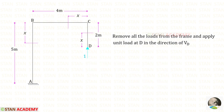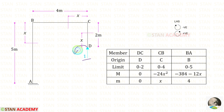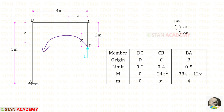Now we are going to find the moment m. We need to remove all of the loads from the frame and apply a unit load at D in the direction of VD. For member DC, up to this section we have the unit load but there is no perpendicular distance, so the moment will be 0. For member CB, the unit load acts in the anticlockwise direction so it is positive, and the distance is X, giving m = X. For member BA, the unit load acts in the anticlockwise direction so it is positive, and the distance is 4, giving m = 4.